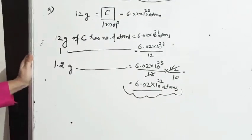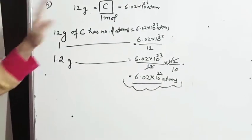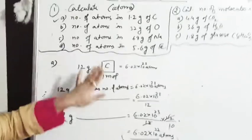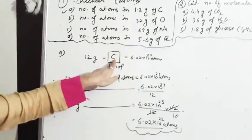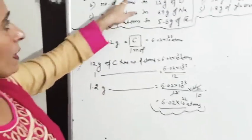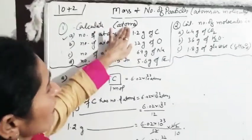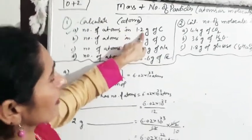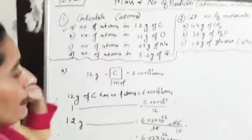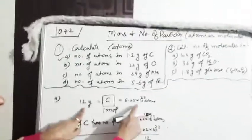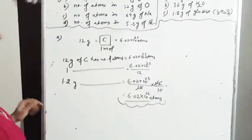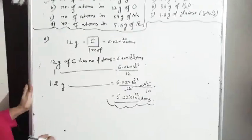Quite simple it is — जिसके बारे में पता करने को बोला है, उस particular element को center में लिख लिया. It represents 1 mole. अब देखो — atoms पता करनी है इतने gram के अंदर. Relationship किस-किस के बीच में है? Mass and number of particles में. Volume के अभी हमें ज़रूरत नहीं है, उसके numericals अलग से करेंगे.